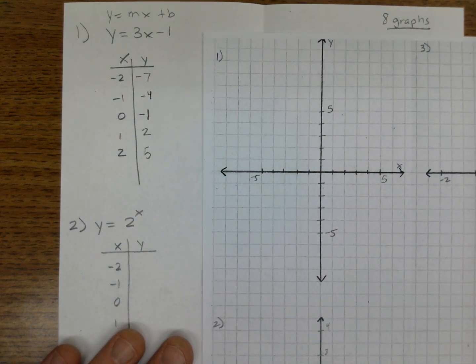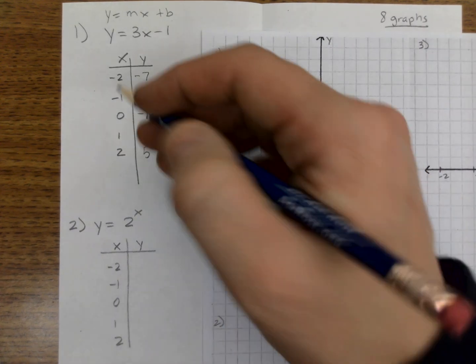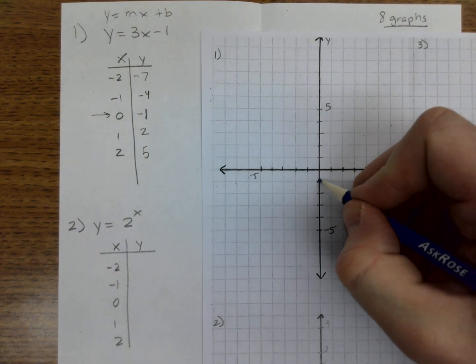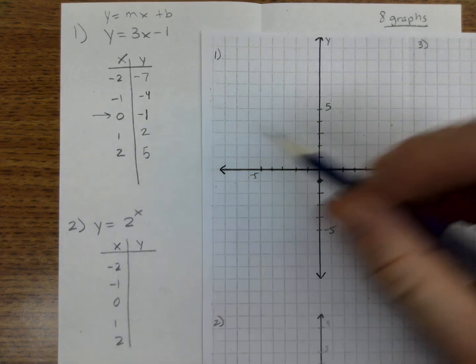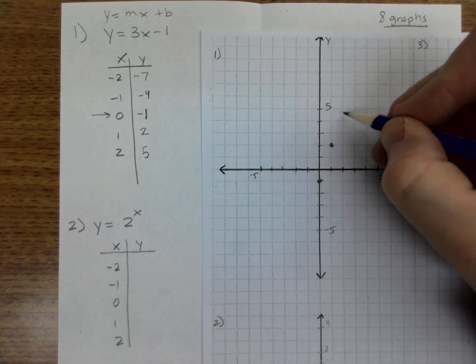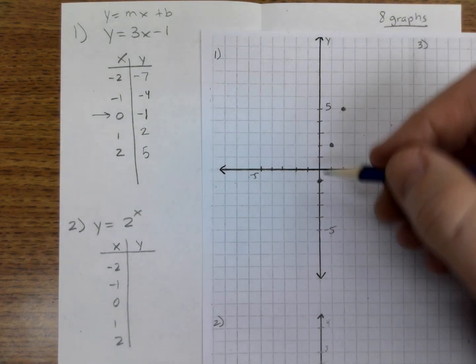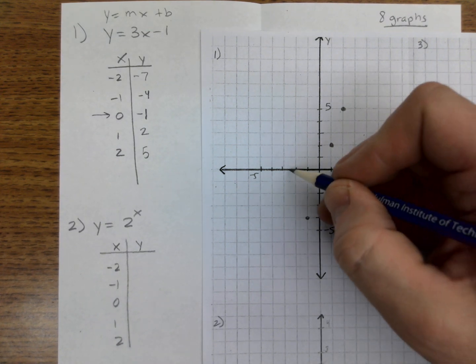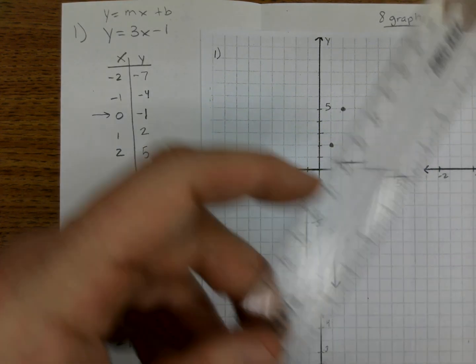So if we turn around and graph them, let's see here. These points would be, I'm going to go ahead and start right here in the middle because it's easiest. 0, negative 1 is here. 1, 2 is here. And 2, 5 is way up there. And if I plot the other ones, let's see, negative 1, negative 4, negative 2, negative 7. There's my graph.